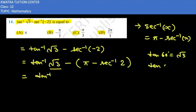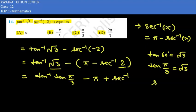In radians, this will be pi by 3 which is equal to square root 3. So we can put here the value as tan pi by 3 minus pi plus sec inverse 2. In the same way we can put here sec pi by 3 which is equal to 2.